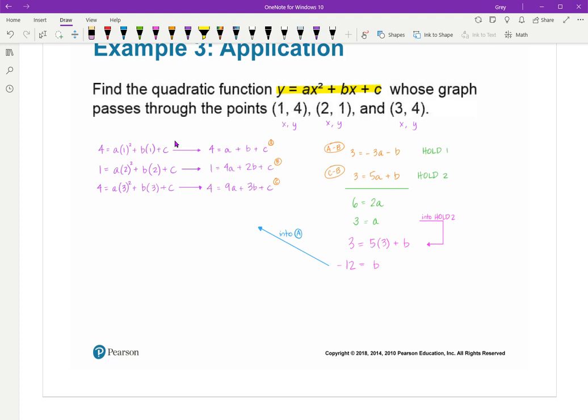And I'm going to go plug that into A. A says 4 equals A, which is 3, B, which was negative 12, and C. And when you solve that, you get 13. Now, this is not three equations and three unknowns. This is an application. So you have to answer the question. I'm supposed to find the quadratic equation. Well, I found A to be 3, B to be negative 12, and C to be 13. So my quadratic equation is going to be y equals 3x squared minus 12x plus 13.